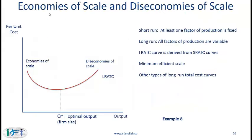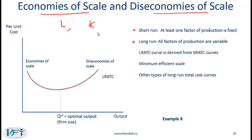Economies of scale and diseconomies of scale. Let's first distinguish between the short run and the long run. In the short run, at least one factor of production is fixed. In the long run, all factors of production are variable. Let's say we consider two factors of production: labor and capital. Economists generally use the symbol K for capital. If in the short run labor is variable but capital is fixed, we will have a certain short run cost curve, for example a short run average total cost curve.